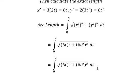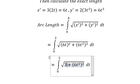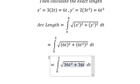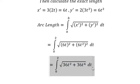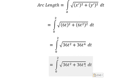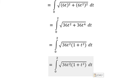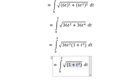So this one we have 36t squared, and this one we have 36t to the power of 4. So we can do factorization by 36t squared. The square root of 36t squared gives us 6t.